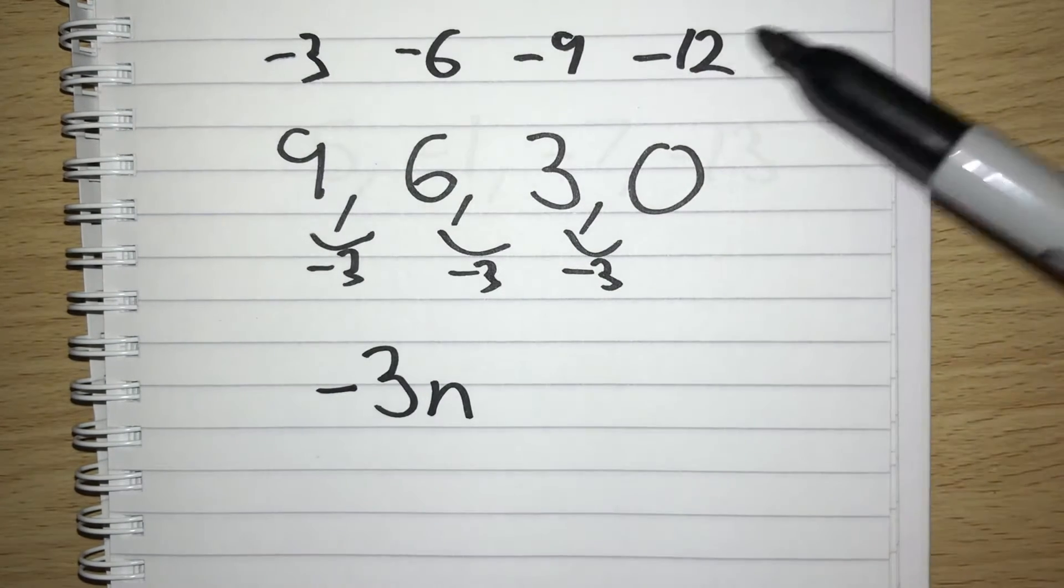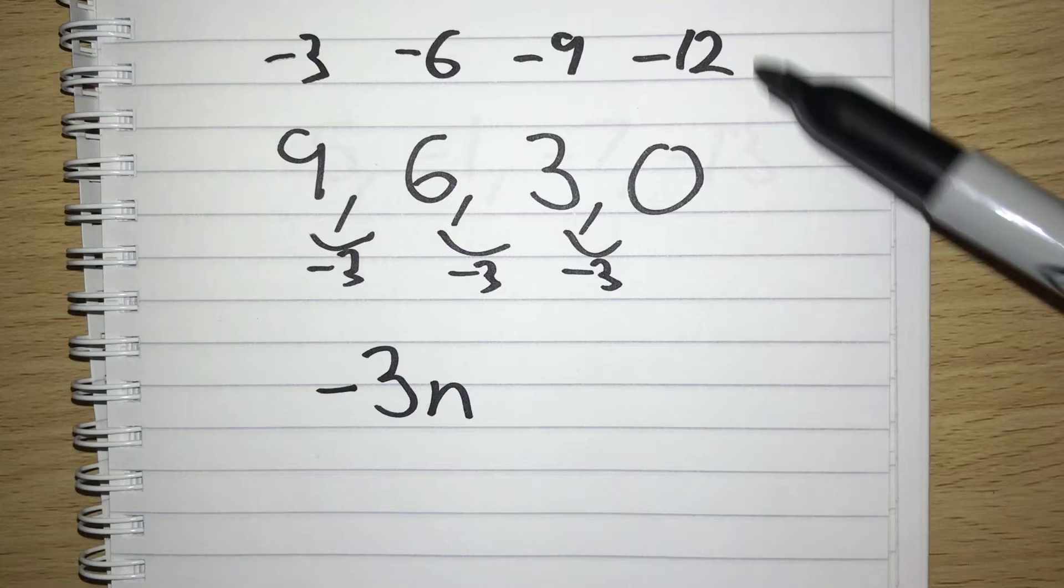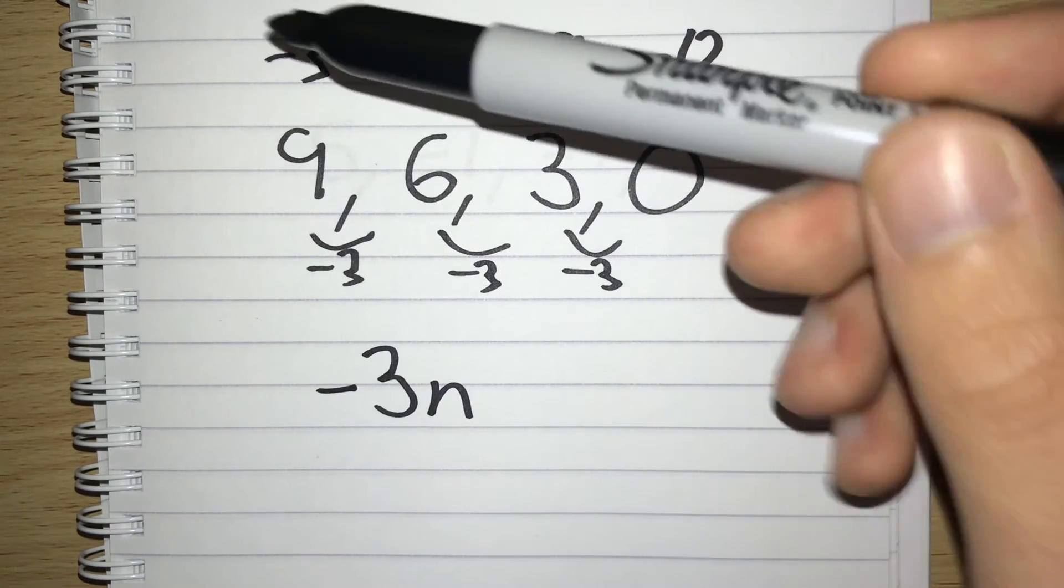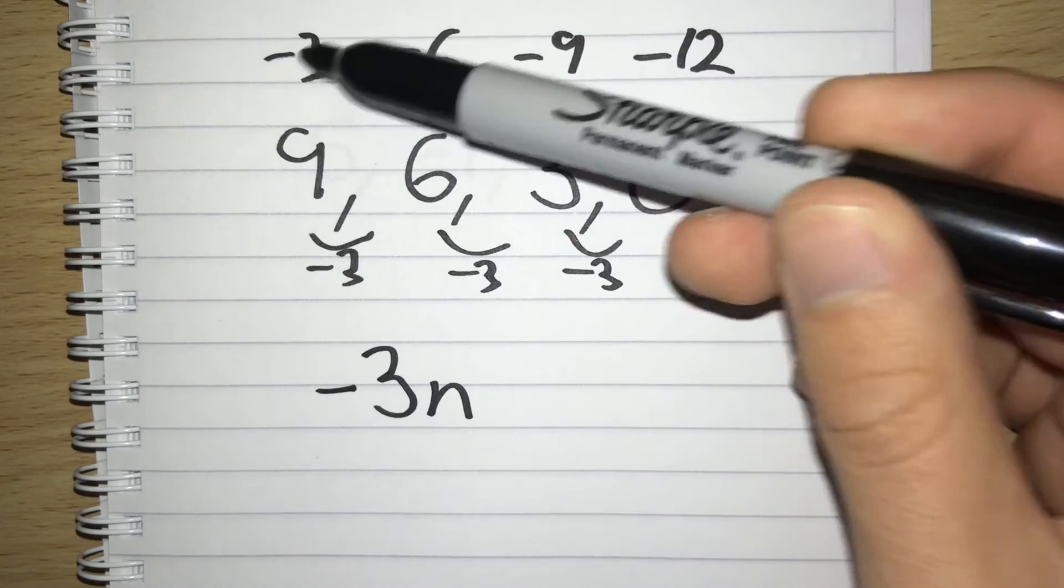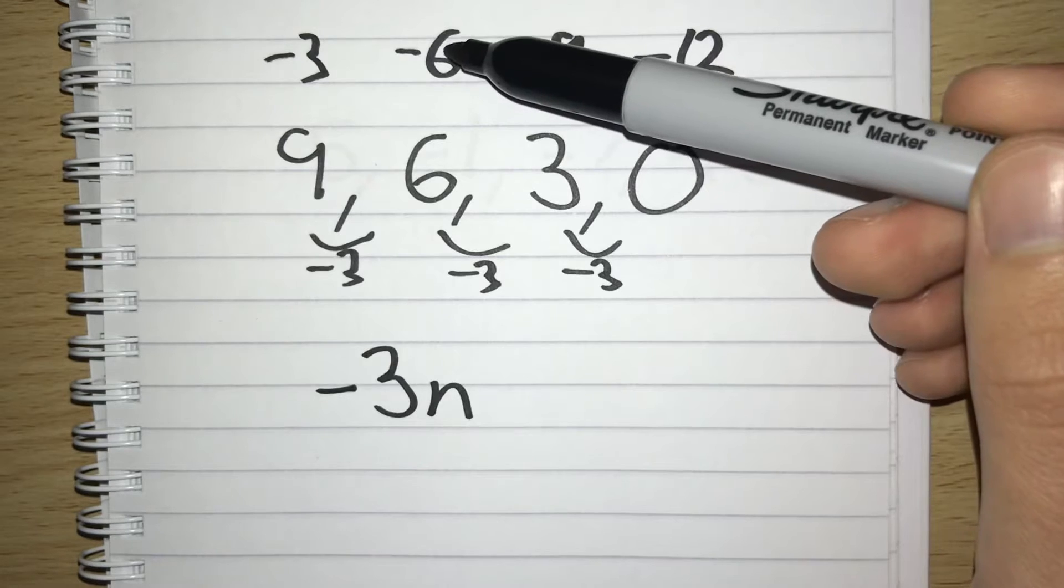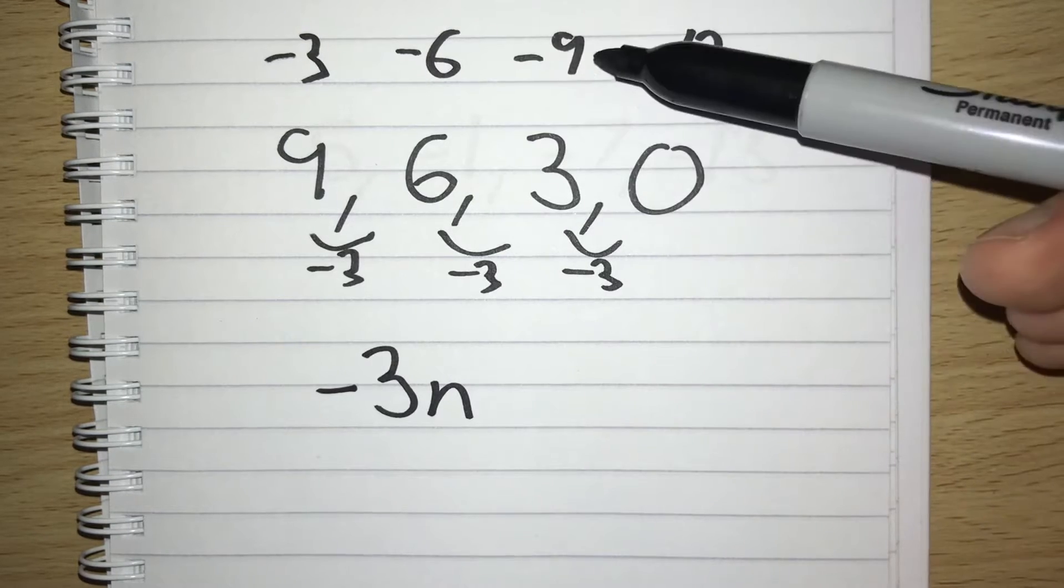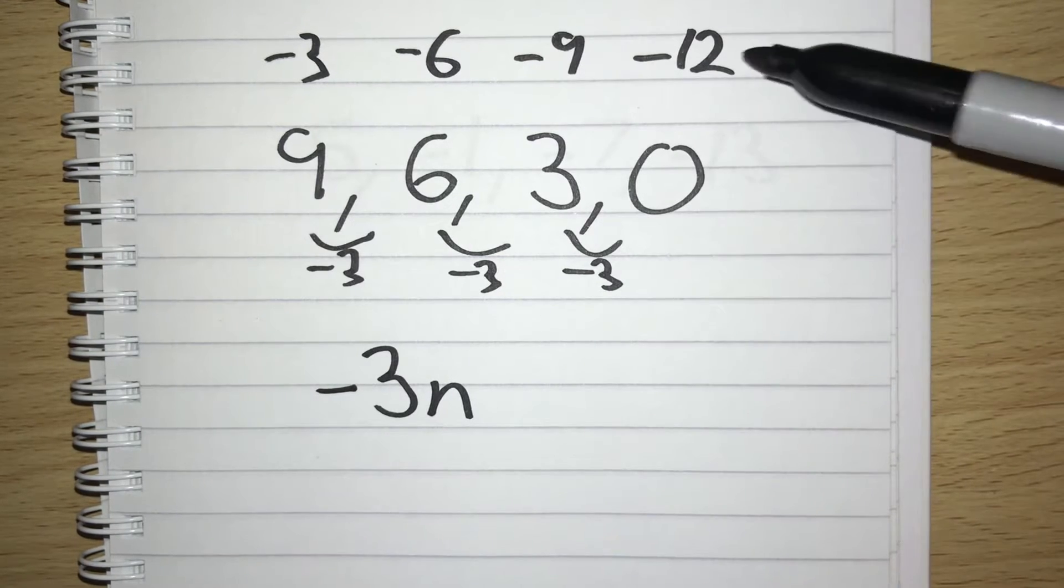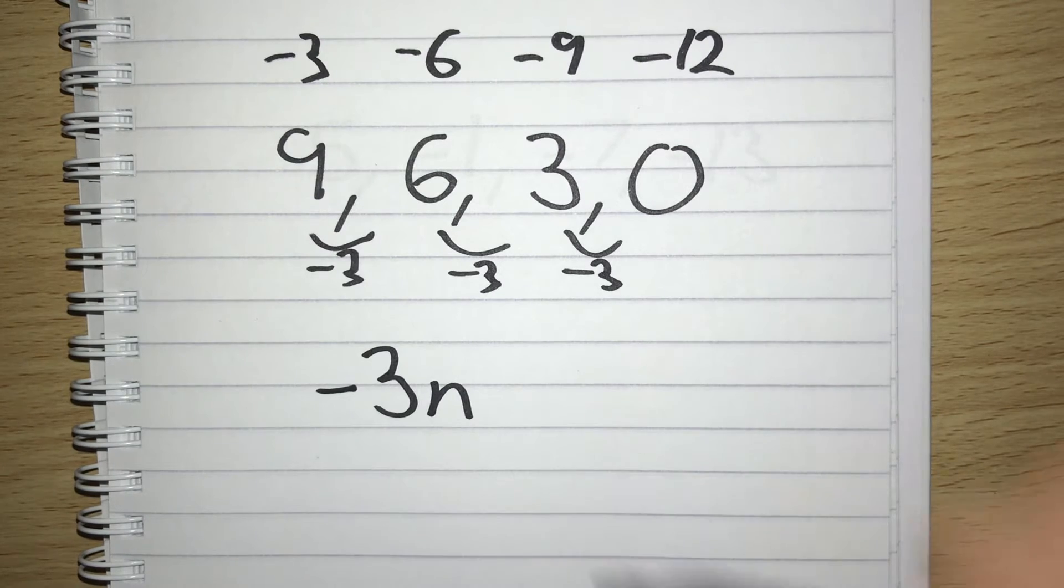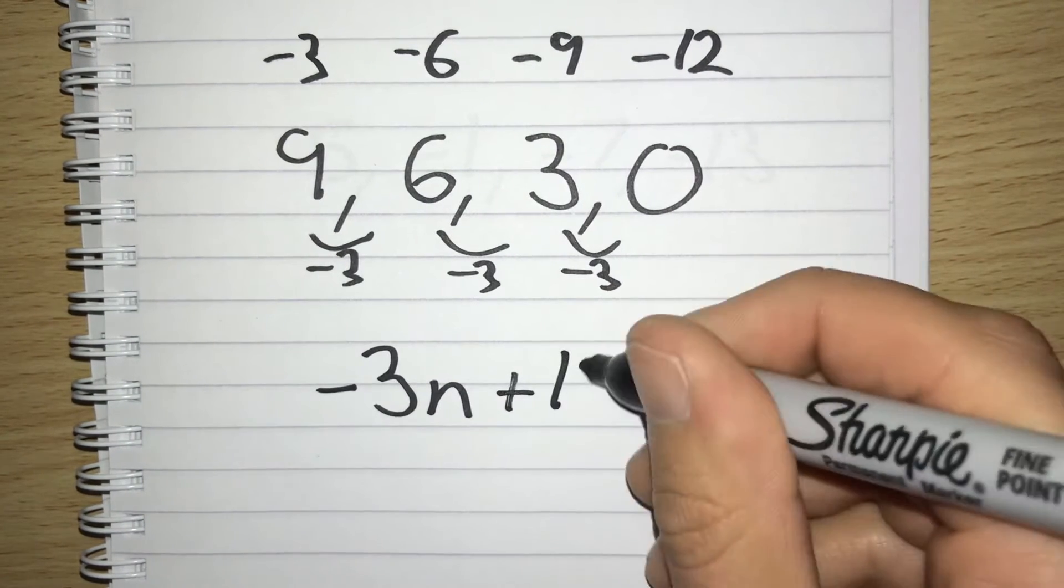So we need to see what we need to add on to this negative 3 times table to get to the sequence we started with. That's going to be 12 every time. We have to add 12 to go from this sequence to the sequence we've got. So minus 3 add 12 would give us 9, minus 6 add 12 would give us 6, minus 9 add 12 would give us 3, and minus 12 add 12 would give us 0. So our nth term is going to be minus 3n plus 12.